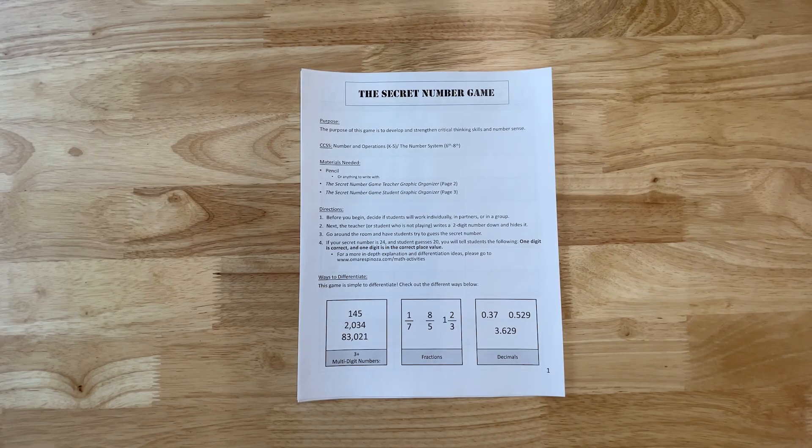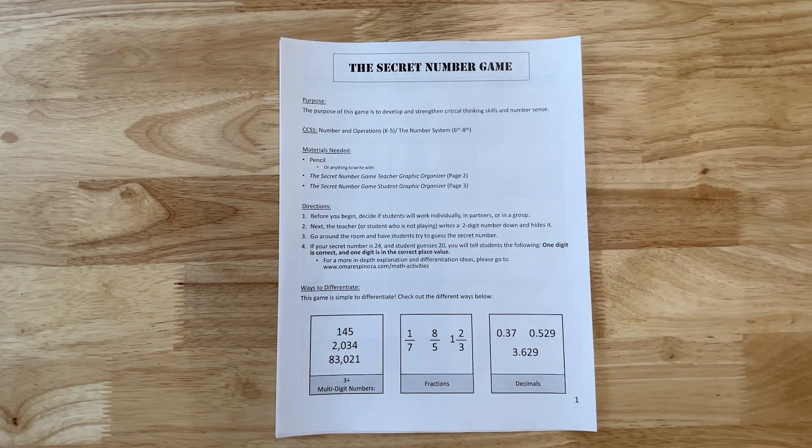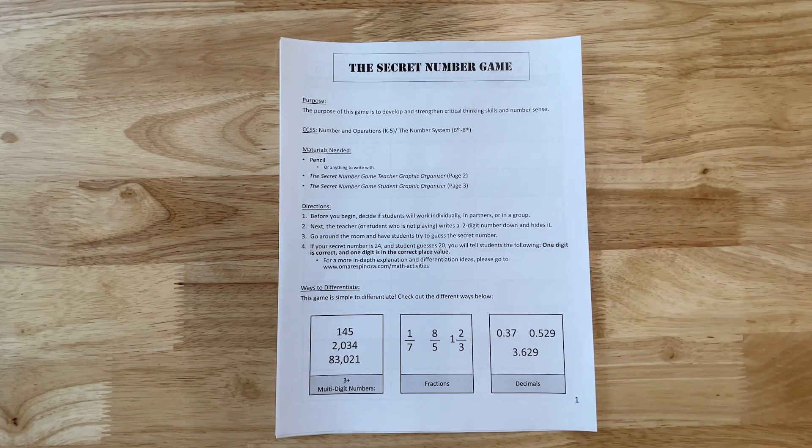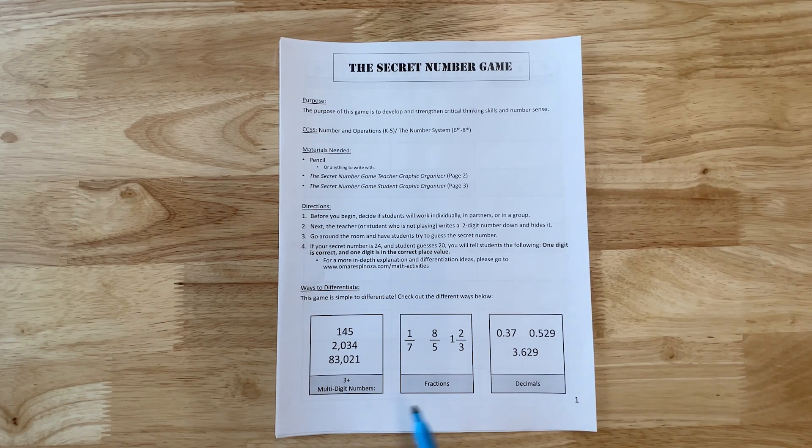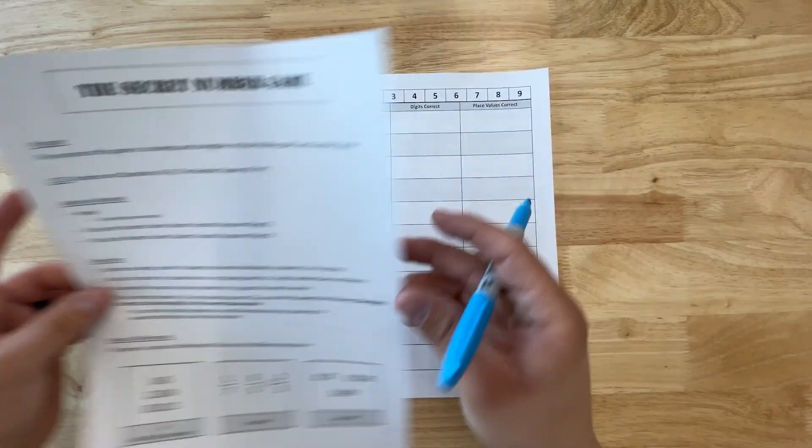When you download your free PDF, the link will be down below in the description. You are going to get materials needed and you can always use different things like whiteboards, individual whiteboards, or plain paper. We have the directions on how to play and also ways to differentiate the game.